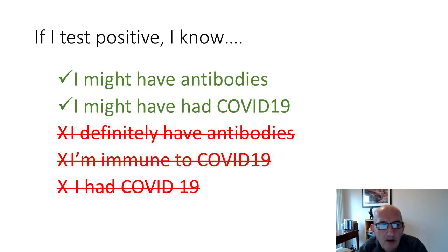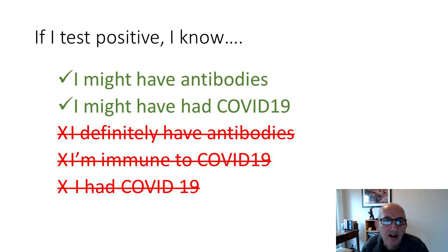Some people who are testing positive for antibodies don't actually have them. It doesn't tell you that you definitely have antibodies, and it doesn't tell you that you're immune to COVID-19, because even if you have antibodies, you might not be immune. If the question you're asking is about immunity, the presence of antibodies does not answer that question. We need to be very precise about what question is actually being answered — that has nothing to do with the general quality of the evidence, but about the quality of the evidence to answer your specific question.